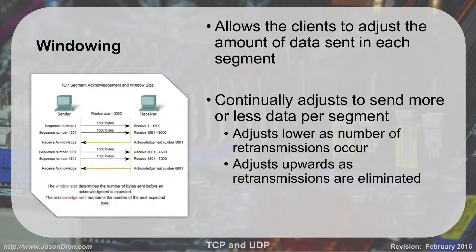Windowing — with TCP, we have a thing called windowing. It allows the clients to negotiate how much data is going to be sent in each segment. Using that book example: I'll start by sending Nick 10 pages and ask, 'Did you get all 10?' He says yes, so I try 15.